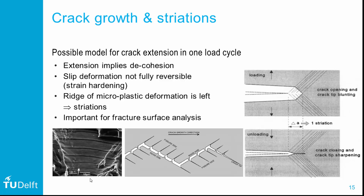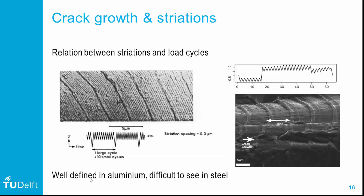Striations differ in shape depending on the magnitude of the load cycle. This is clearly illustrated with the fracture surface on the left, where a load spectrum was applied in which after 10 small cycles a larger load cycle was applied. The fracture surface reveals the repetitive nature of the striations, with a single larger striation related to the larger load cycle. Looking at an angle with respect to the fracture surface reveals that the surface is not perfectly flat — although fatigue fractures are macroscopically smooth and flat, microscopically they are not.